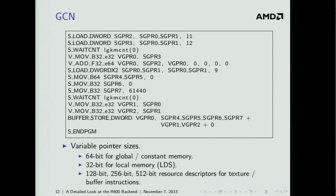GCN also introduces variable pointer sizes: 64-bit pointers for global and constant memory, 32-bit pointers for local memory, and 128-bit, 256-bit, or 512-bit resource descriptors for texture and buffer instructions. In the sample program, the first instruction is a load from constant memory using a pair of 32-bit GPRs for a 64-bit pointer, and the store-buffer instruction uses four consecutive GPRs for a 128-bit resource descriptor. Getting this integrated with LLVM has been a challenge, but Matt's been doing good work on that.